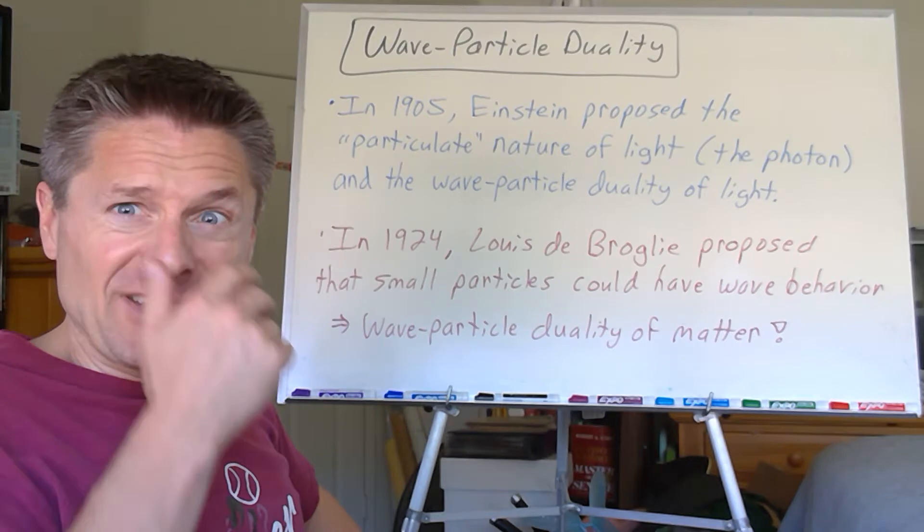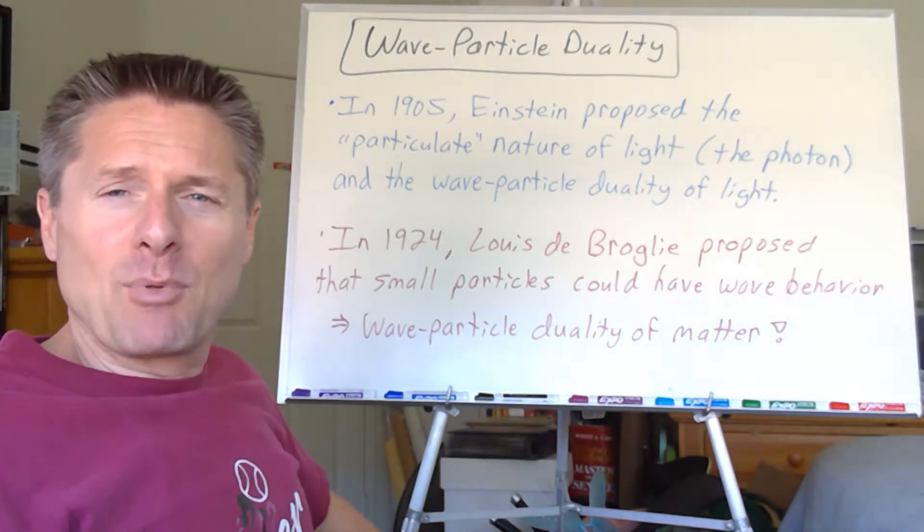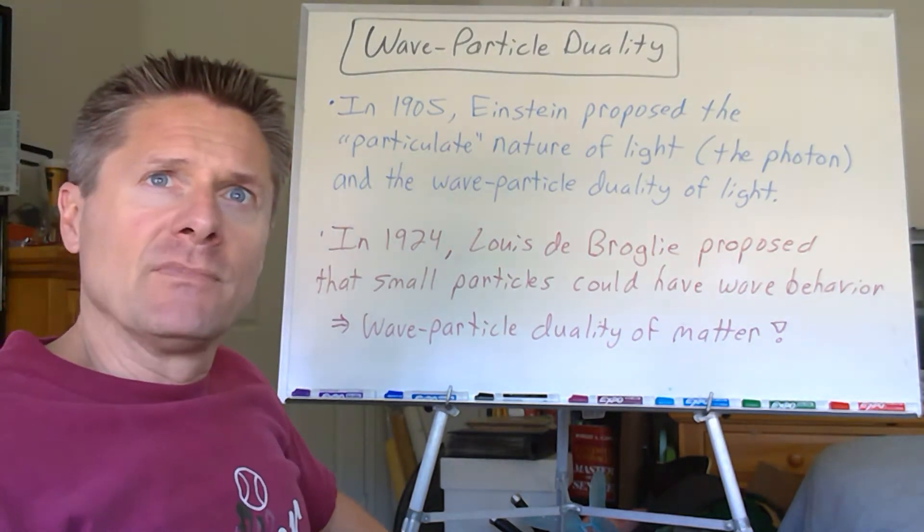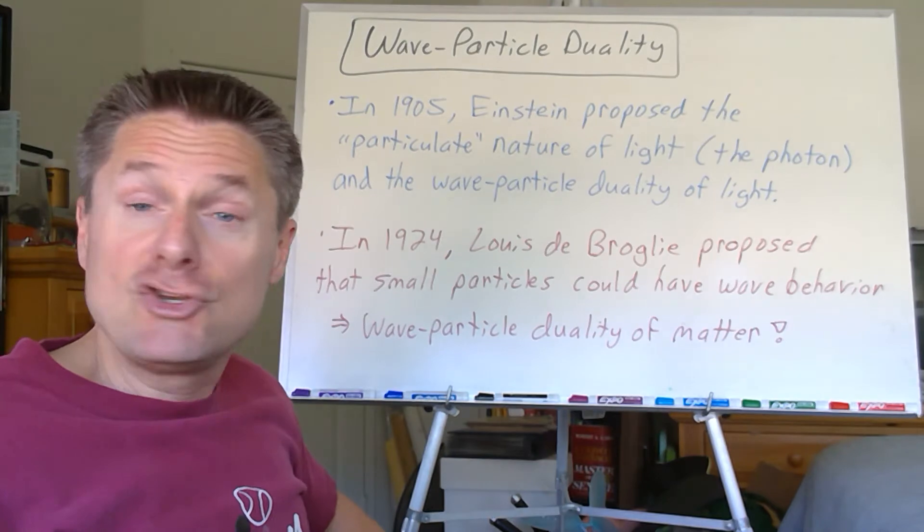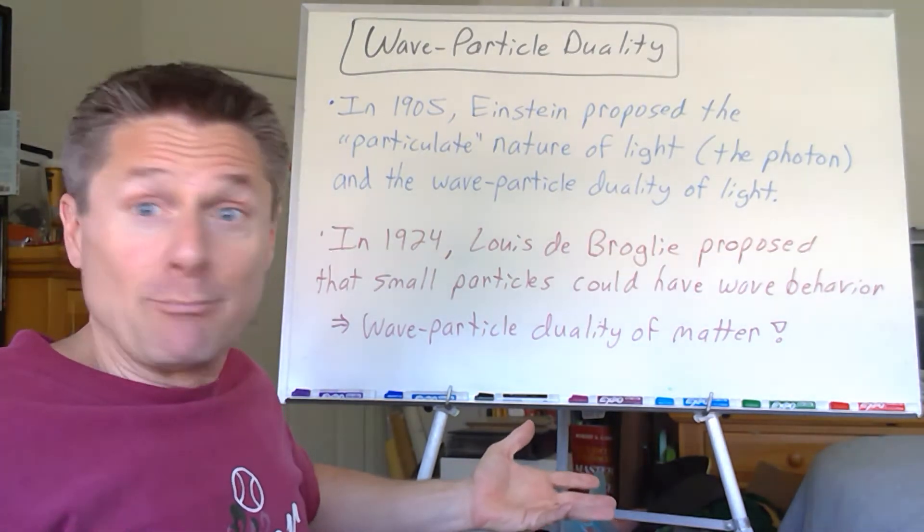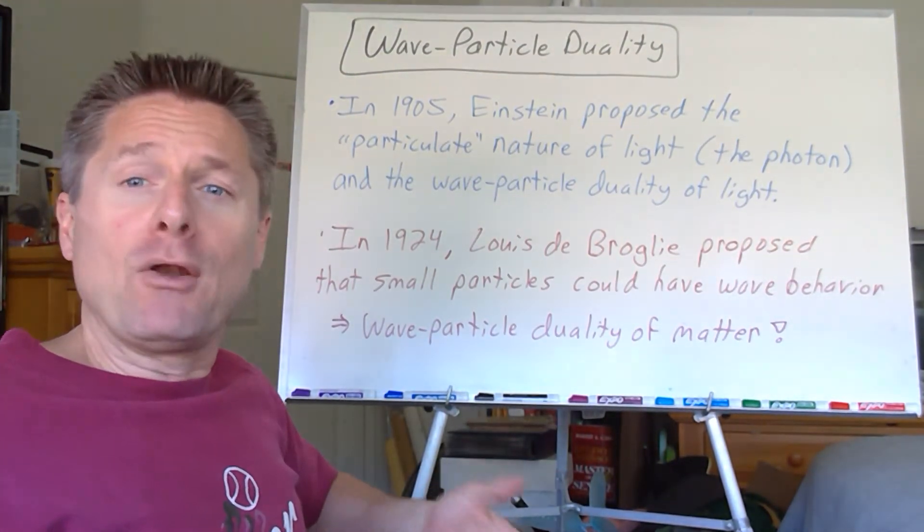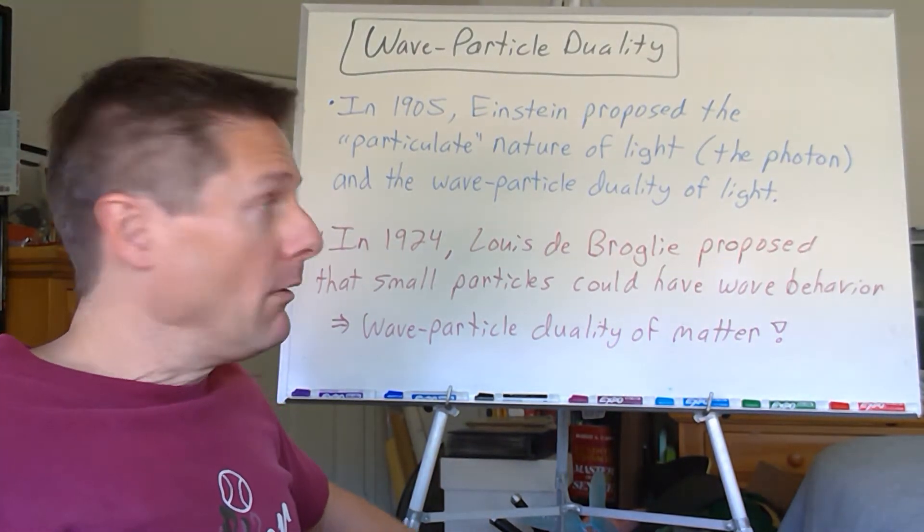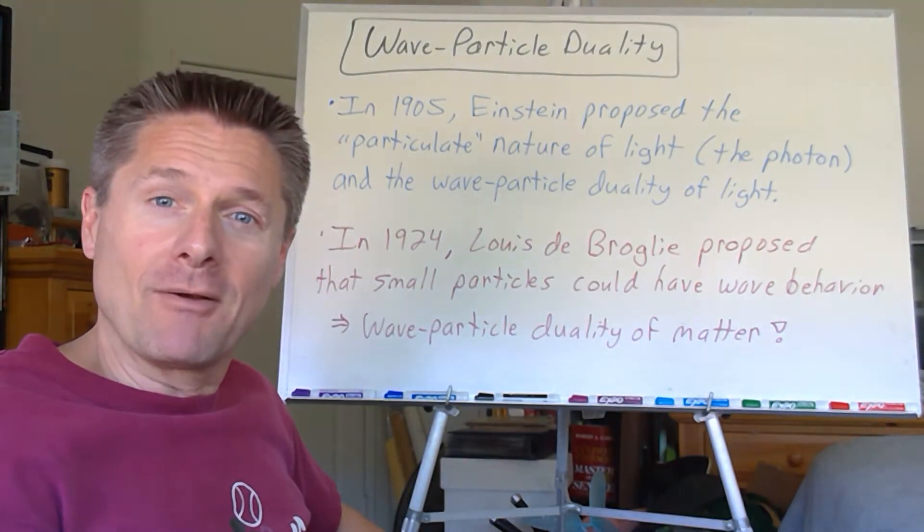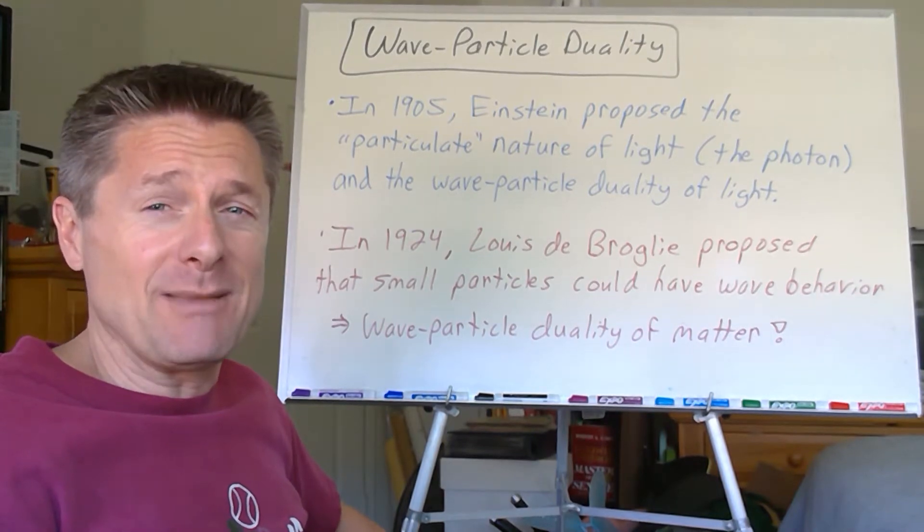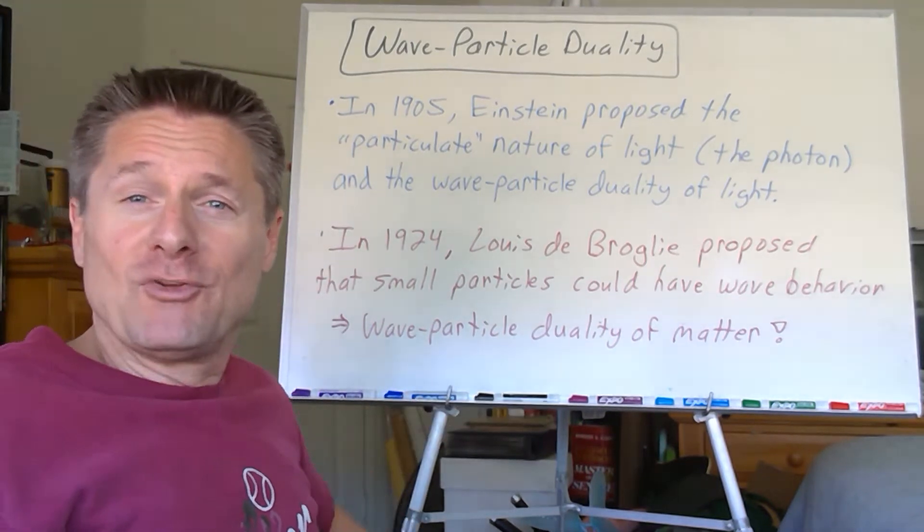Well, 1924, I think he was a graduate student at the time, Louis de Broglie goes, well if light can have wave and particle duality, why can't particles have wave and particle duality too? So he proposed it. Didn't prove it, he just proposed it and says, if light can be a particle and a wave, why can't a particle be a particle and a wave? So he just proposed that small particles could have wave-like behavior. That was weird. He proposed the wave-particle duality of matter.